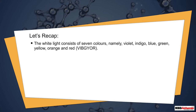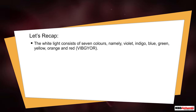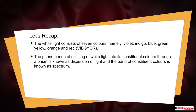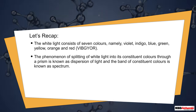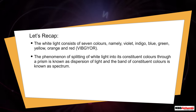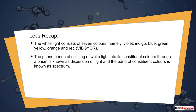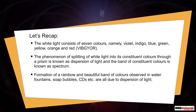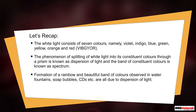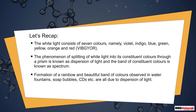Let's recap. White light consists of seven colors — violet, indigo, blue, green, yellow, orange, and red — VIBGYOR. The phenomenon of splitting of white light into its constituent colors through a prism is known as dispersion of light, and the band of constituent colors is known as spectrum. Formation of a rainbow and the beautiful band of colors observed in water fountains, soap bubbles, CDs, etc. are all due to dispersion of light.